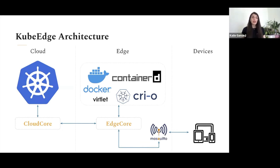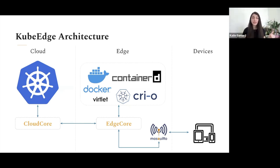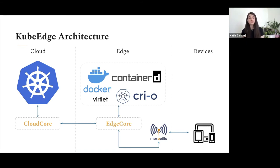Let's look at the KubeEdge architecture briefly. There are three main areas: cloud, edge, and devices. The devices are the physical components with end users, while edge represents the edge nodes. On the cloud side, we have a Kubernetes cluster integrating with cloud core components, which communicate with Kubernetes and proxy requests to the edge using a web socket. On the edge side, we have edge core components communicating with the container engine runtime and with the MQTT client. We can manage containers on the edge using runtimes such as Docker, Containerd, CRI-O, or Virtlet.